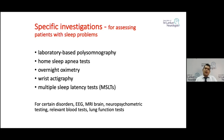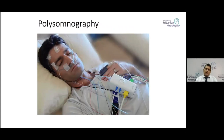Apart from these, we would do certain other tests depending on the symptomatology and the patient — EEG, MRI scan of the brain, neuropsychometric testing, relevant blood tests, and possibly lung function tests. Overnight polysomnography is one of the key tests we use to assess sleep objectively, allowing us to measure several physiological parameters at the same time.